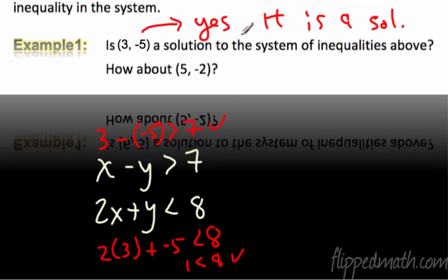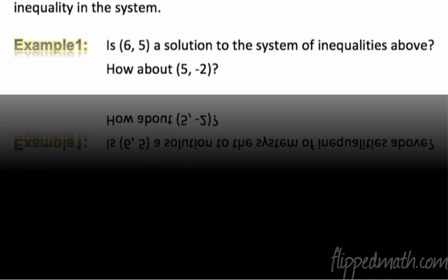How about the next point? (5, -2). We'll do that one up here. Is 5 minus negative 2 greater than 7? Well, we get 7. Is 7 greater than 7? No, actually it isn't. If it said greater than or equal to, we'd be all right, but it doesn't. It just says greater than. 7 is not greater than 7. So (5, -2), the answer would be no. It's not a solution of that equation.